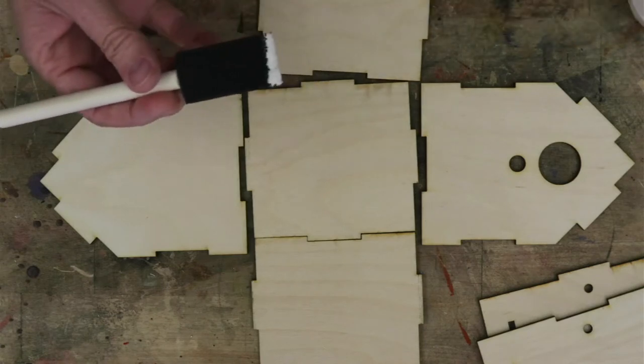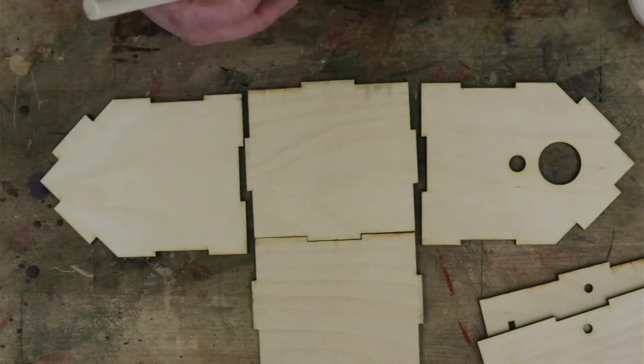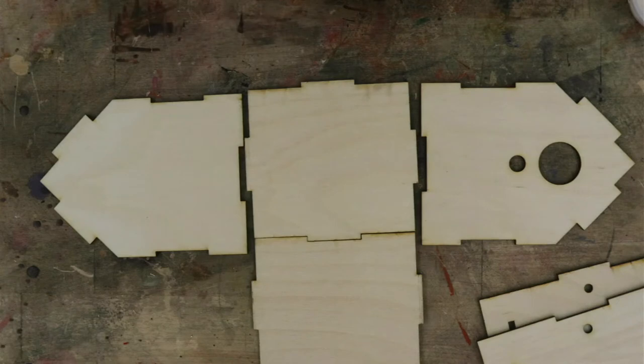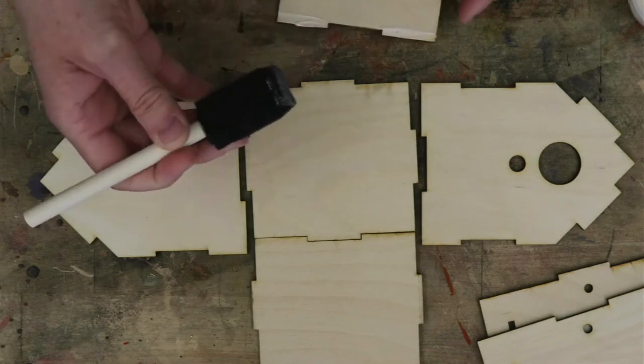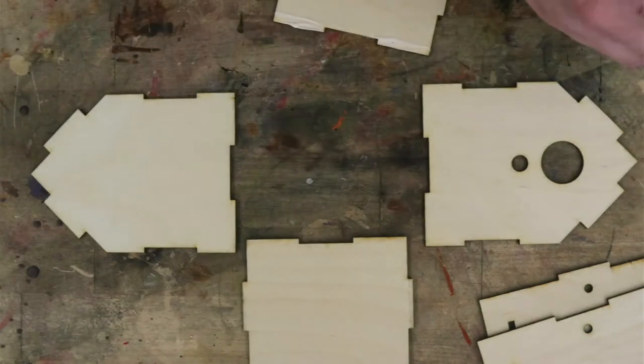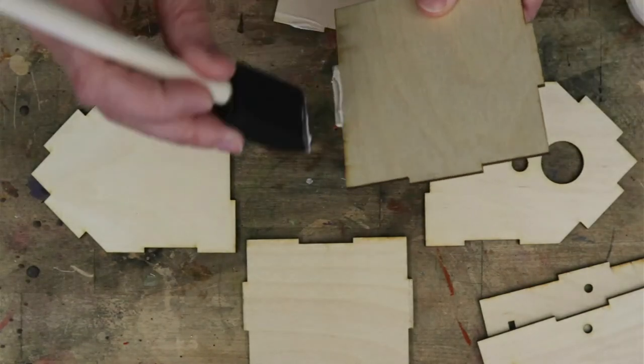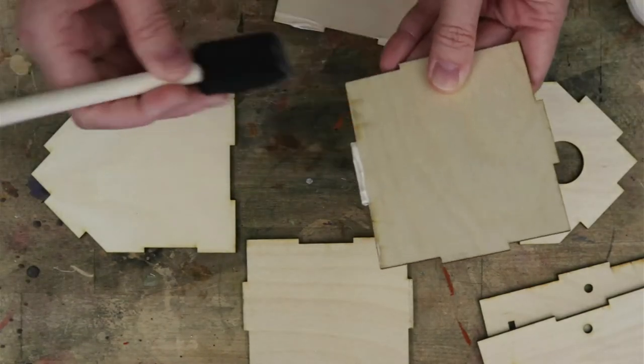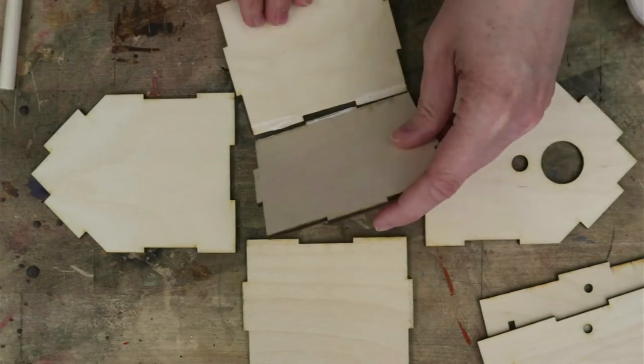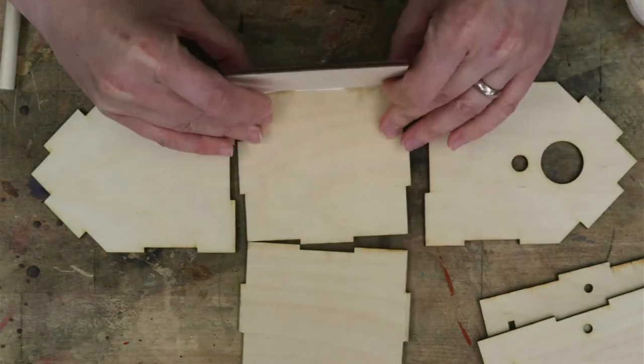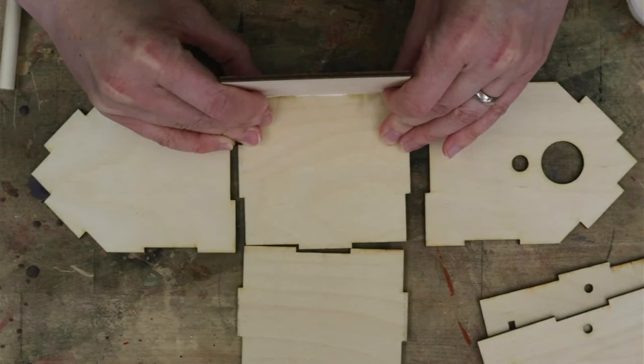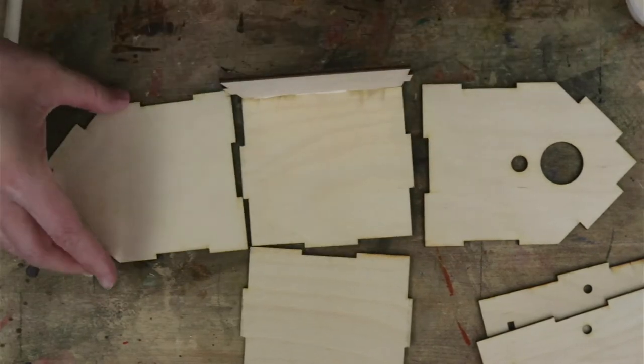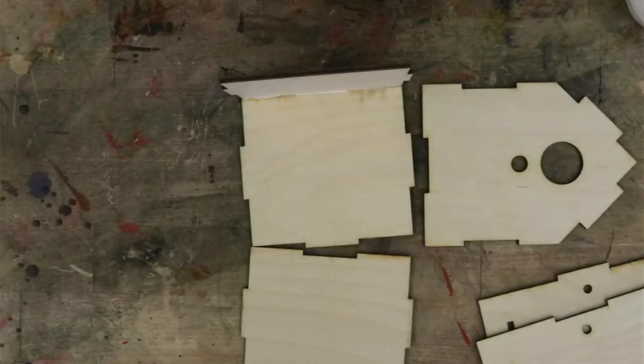So for gluing it together, simply apply the glue where it needs to be. And then hold it together briefly, let it set a little bit and move on to the next piece.